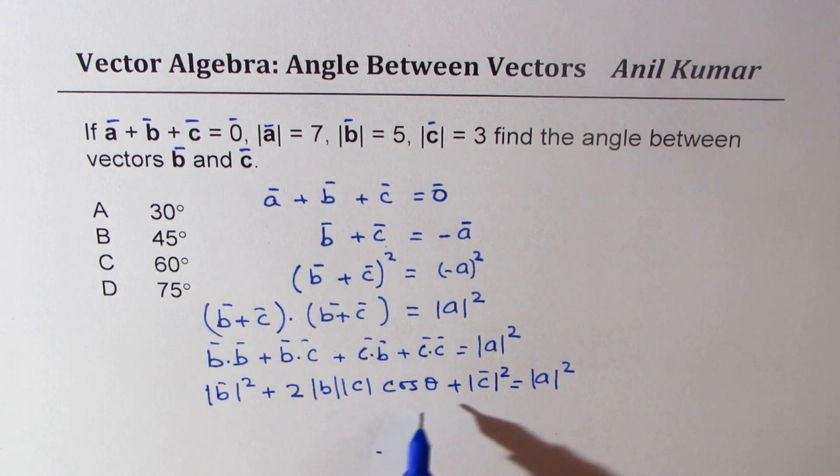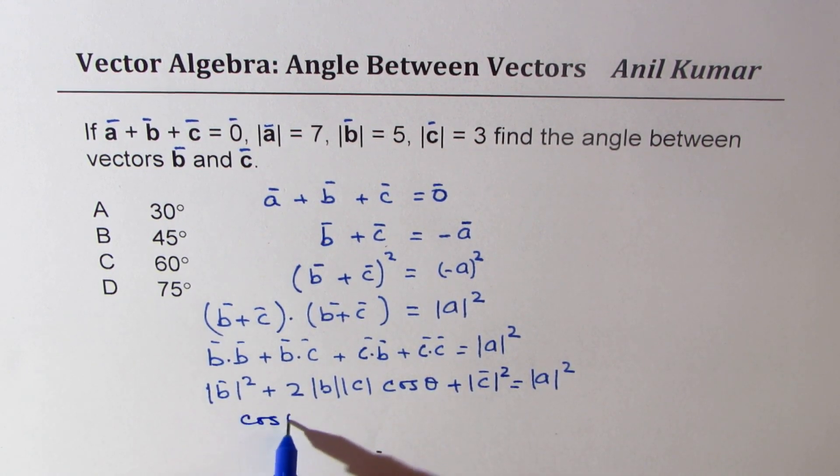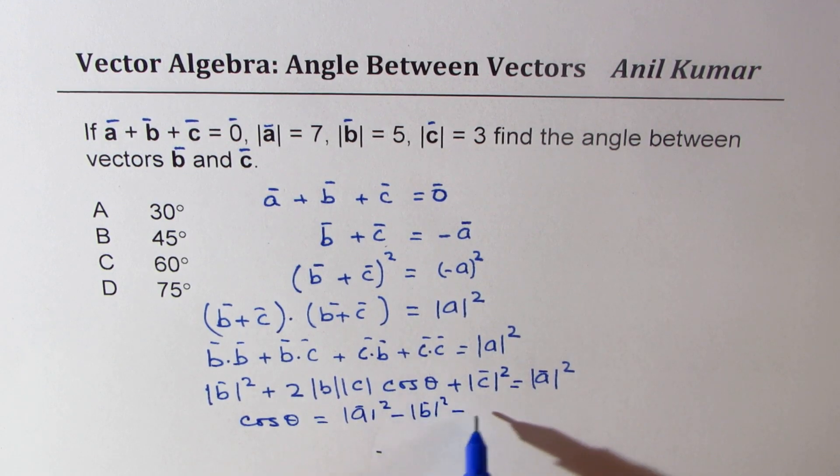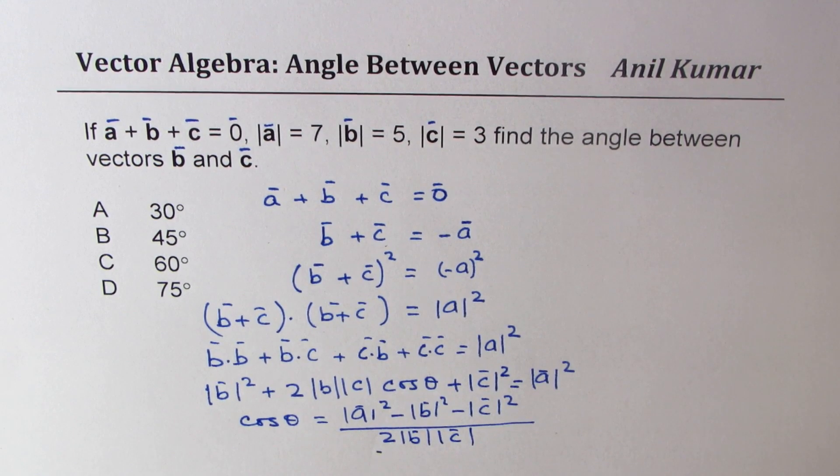From here we can isolate cos theta. So we get cos theta equals |a|² minus |b|² minus |c|² divided by 2|b||c|, which is the cosine law equation.